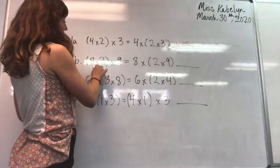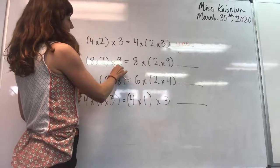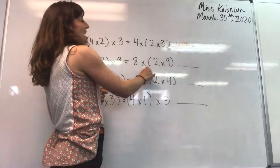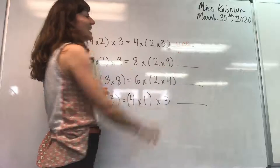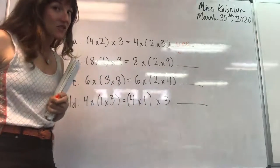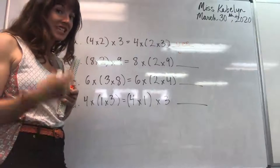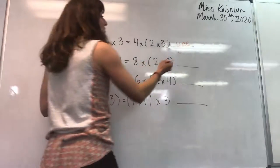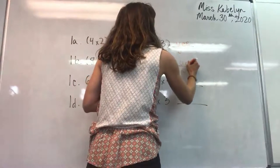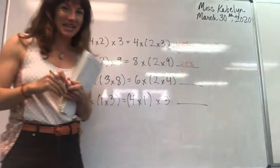Okay, 1b, eight times two times nine equals eight times two times nine. Do we have the same factors on each side or the same numbers being multiplied on each side? Yes, we do. So we can put a yes in our book. Please put a yes in your book.